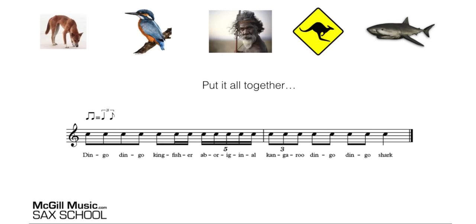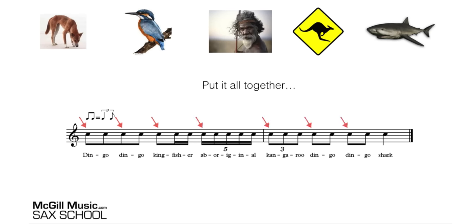Let's try combining some of these ideas together, because the thing about all the things I've shown you in this lesson is that you can mix and match them to help you decipher rhythms as you're going through reading music. In this example, we can see it's a swung rhythm. On the first bit we've got dingo, dingo, kingfisher, aboriginal, kangaroo, dingo, dingo, and a shark at the end. Let's try doing all of that in time: dingo, dingo, kingfisher, aboriginal, kangaroo, dingo, dingo, shark.